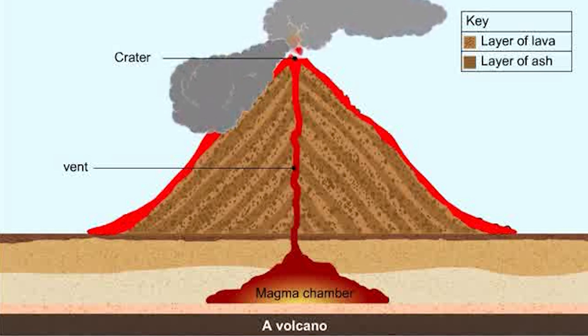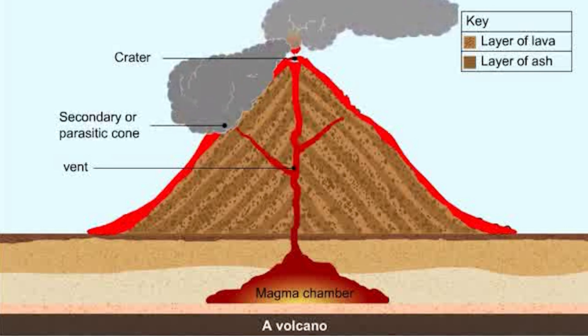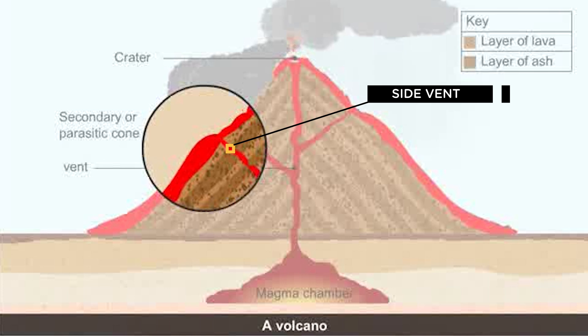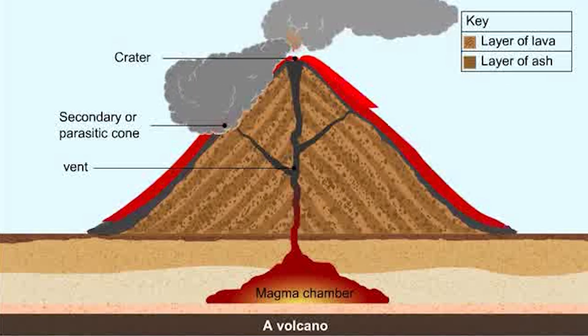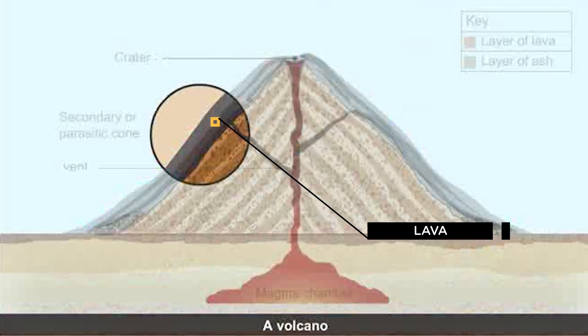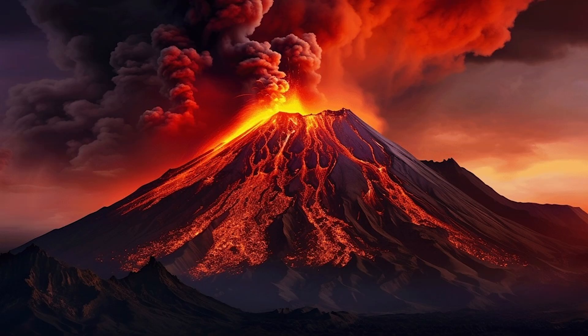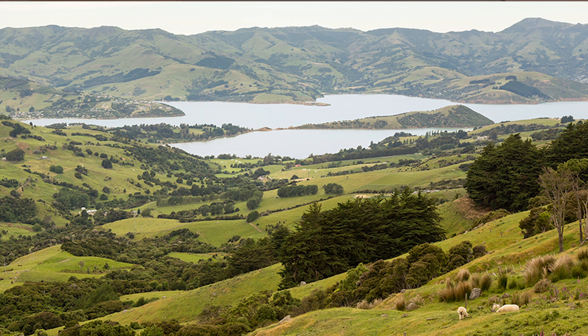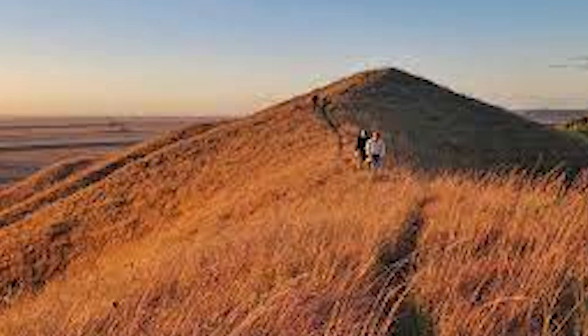Most magma flows out through the main vent while a small quantity flows out through the side vents. When magma reaches the surface of the earth it is now called lava, and it is this lava that cools and solidifies to form a volcanic mountain. Sometimes the magma that erupts is extremely liquid, making it flow for a very long distance forming hills, while other times it is very thick, making it flow just a short distance to form single mountains.